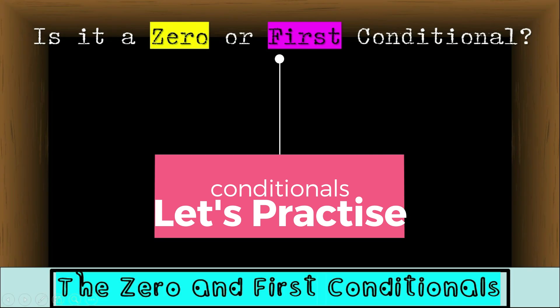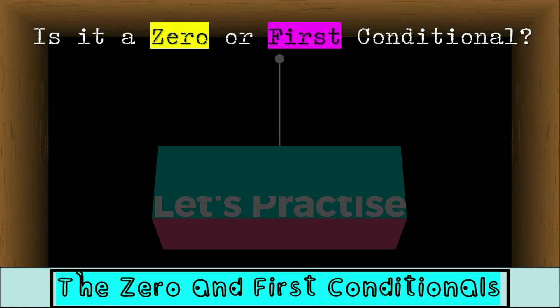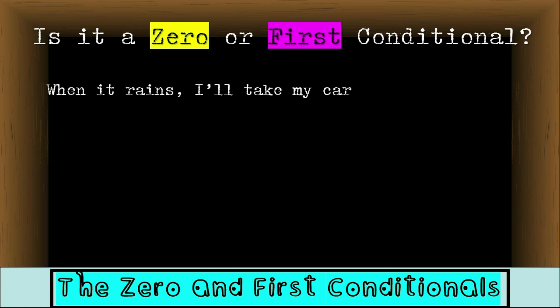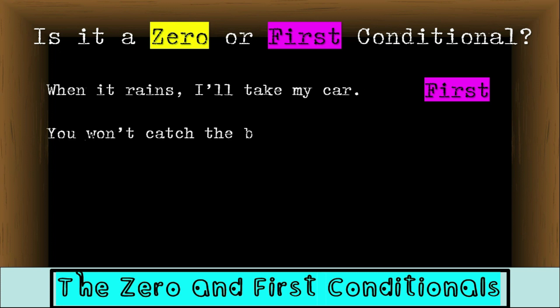OK, let's practice. Is it a zero or first conditional? When it rains, I'll take my car. That's correct — this is the first conditional because it's possible. Next: you won't catch the bus if you walk. Is this a fact, a habit, or is it possible? It's possible, so this is the first conditional.